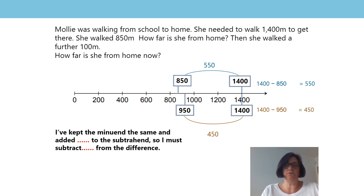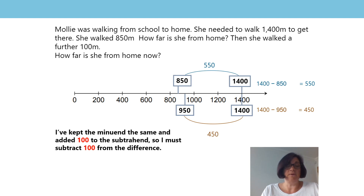This means that the difference must decrease by 100. Is this what you got? Let's try putting that into our stem sentence. I've kept the minuend the same and added 100 to the subtrahend, so I must subtract 100 from the difference. Did you choose to represent it using a bar model? I've tried it that way as well, and here's how I did it.